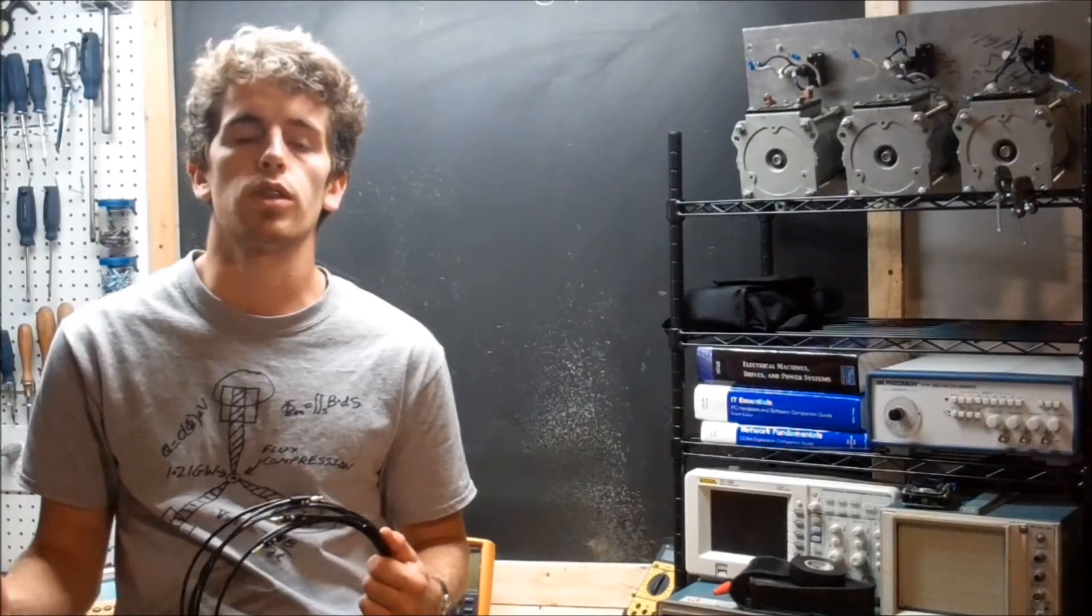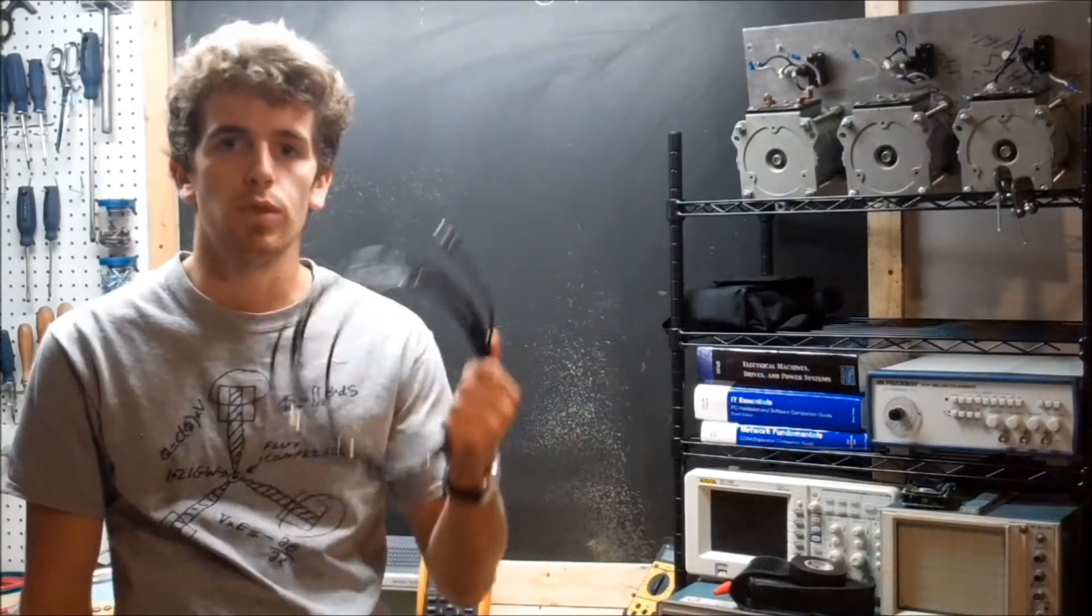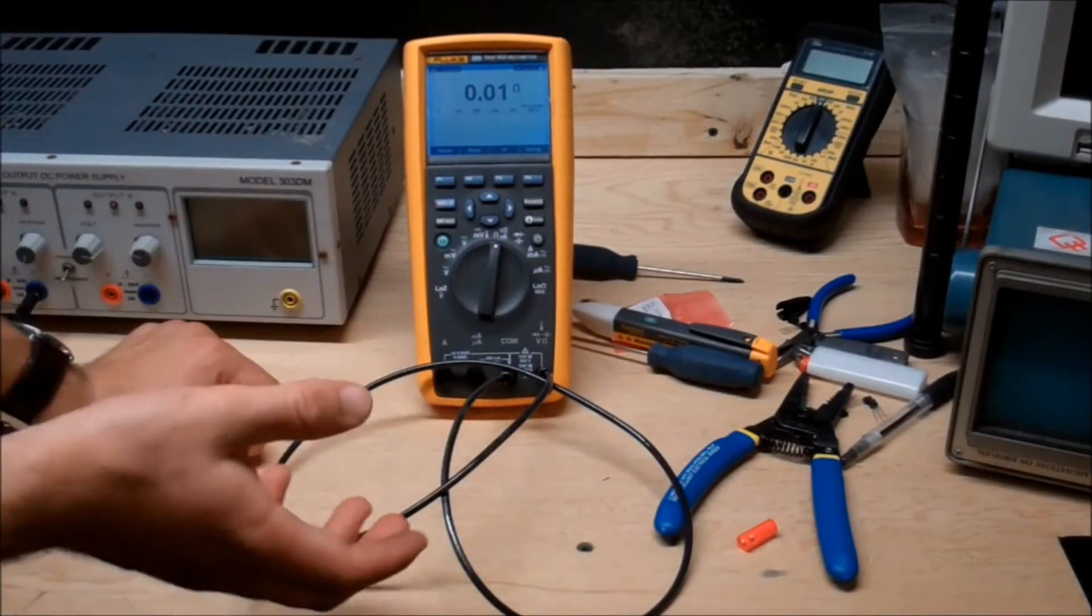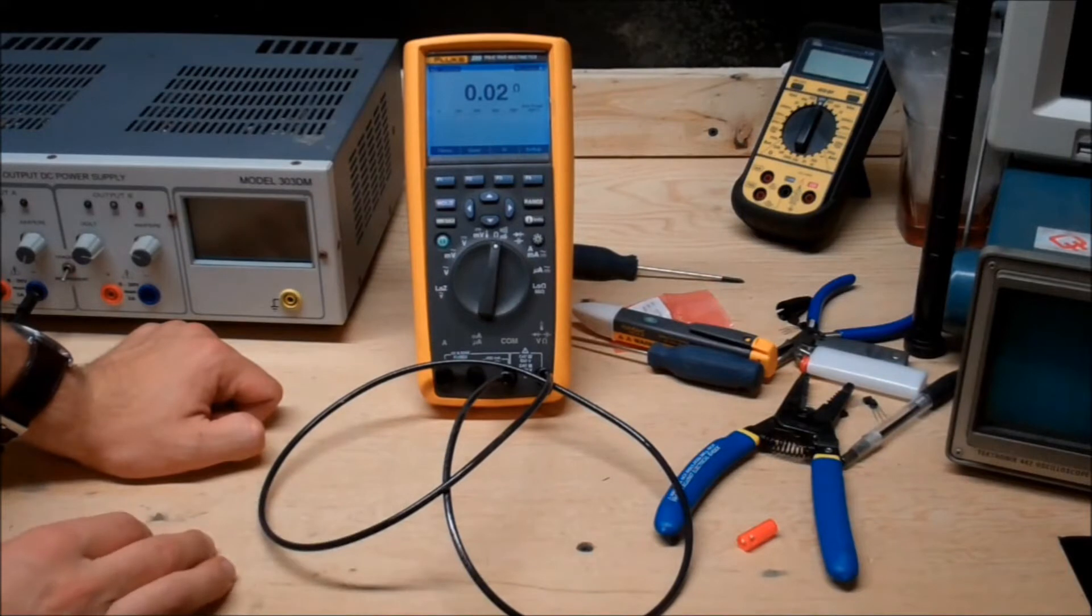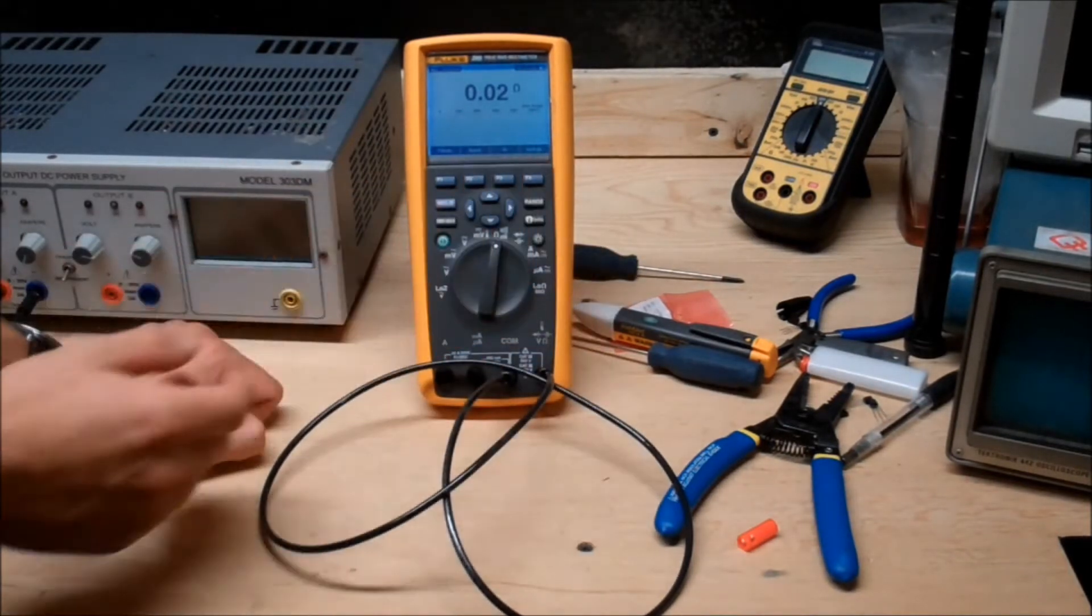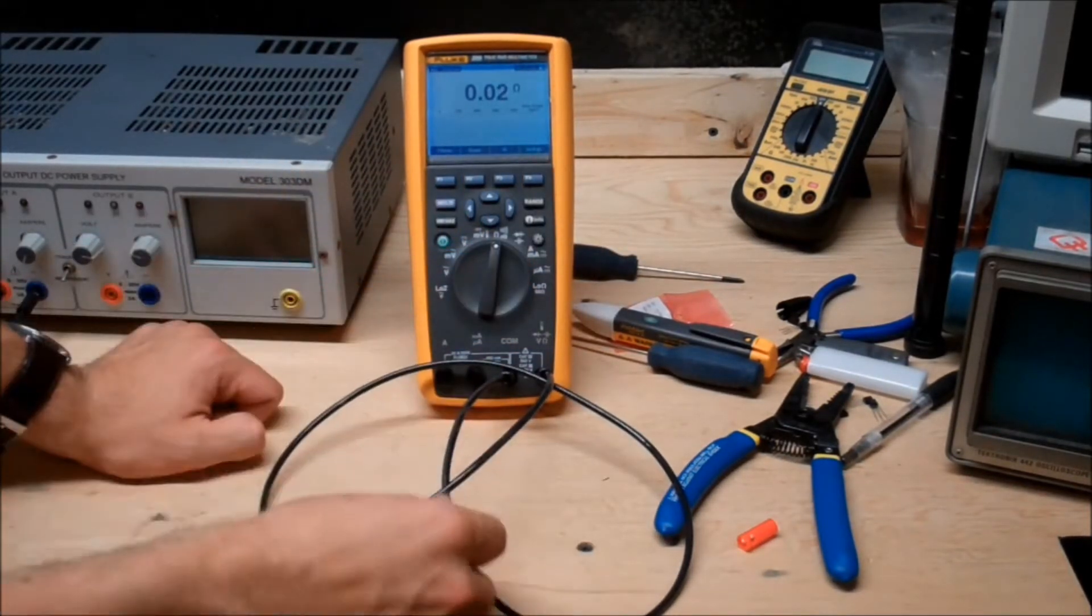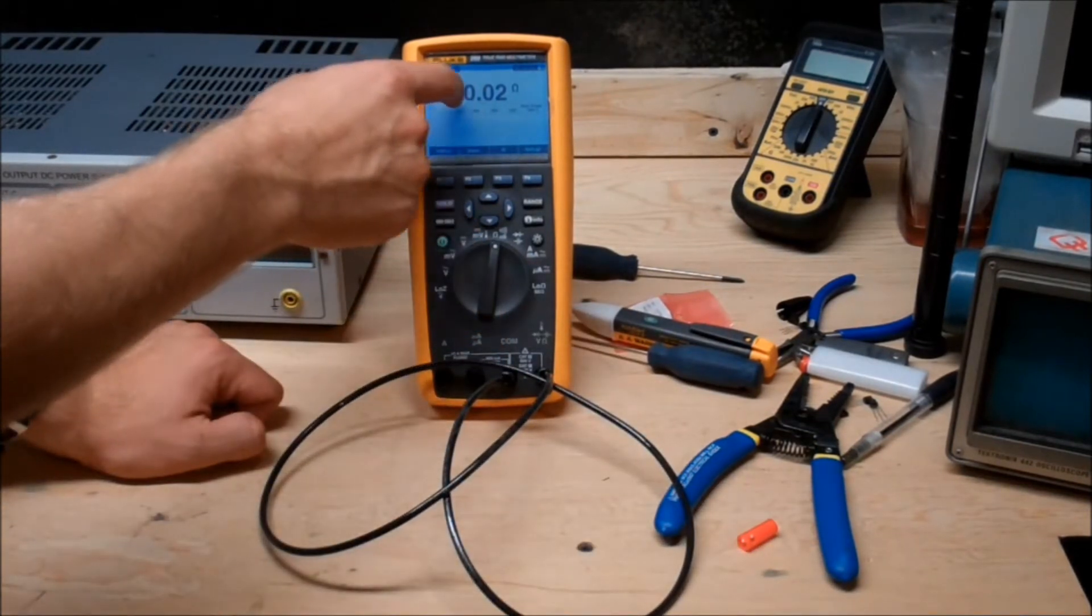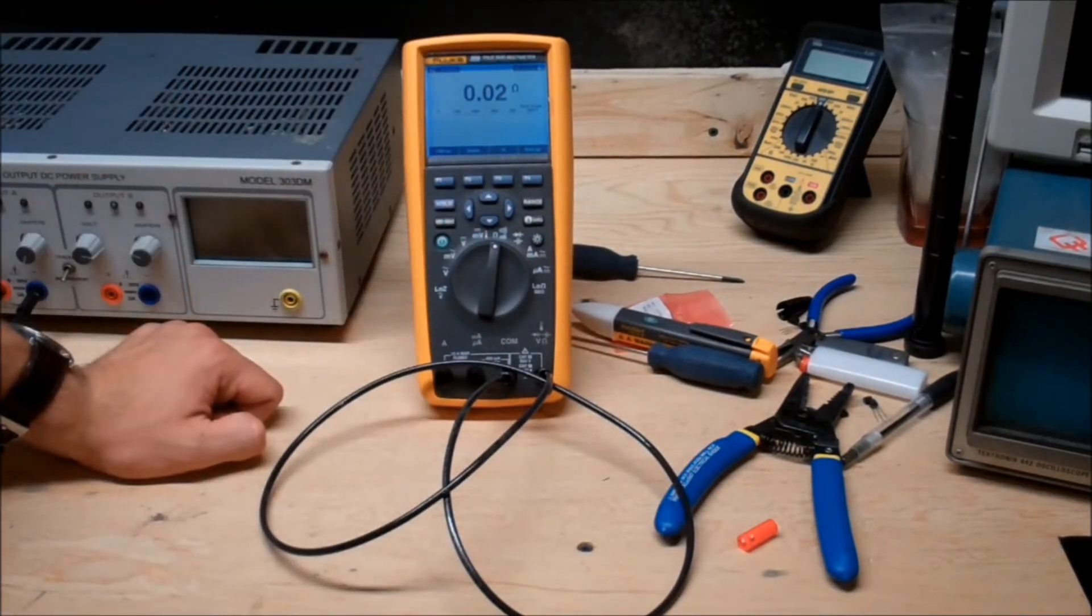Just to continue on saying that a multimeter really can't take really low impedance measurements accurately, I got my Fluke 289 set to ohms, and I just plugged one end of the cable into the positive, one into the negative. As you can see, it is actually taking a measurement and it's probably not too far off, but I want to compare it to an actual Kelvin measurement.